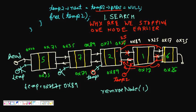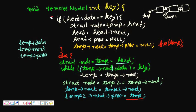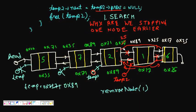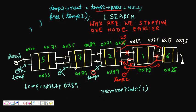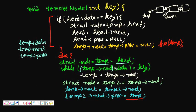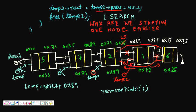What else is left in the code? We still need to handle a special case. In the while loop we check temp->next->data, meaning we never check the very first node. So if head->data is equal to the key — meaning we want to delete the first node itself — we need to handle that separately.